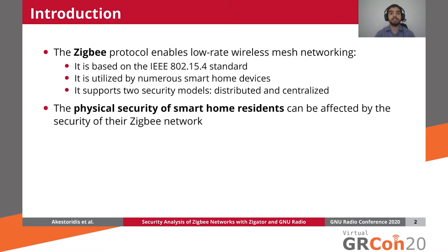Given that Zigbee devices typically interact with the physical world through sensors and actuators, it is important to ensure that they meet appropriate security goals because they can also affect the physical security of smart home residents. For example, consider a smart home with Zigbee-enabled door locks. If the Zigbee network is not properly secured, then an attacker may be able to unlock these door locks without proper authorization.